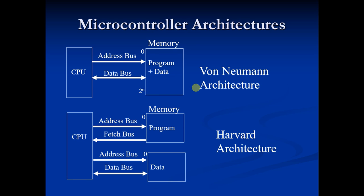Harvard architecture is better than von Neumann architecture. This is the basic difference between these two architectures.